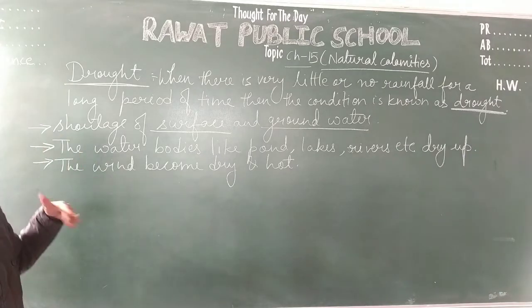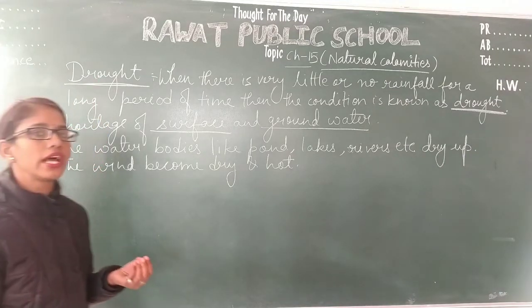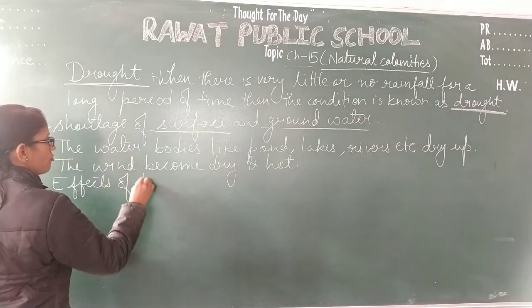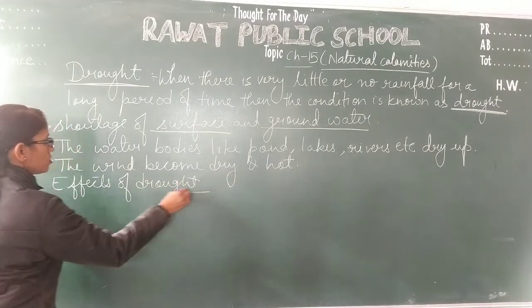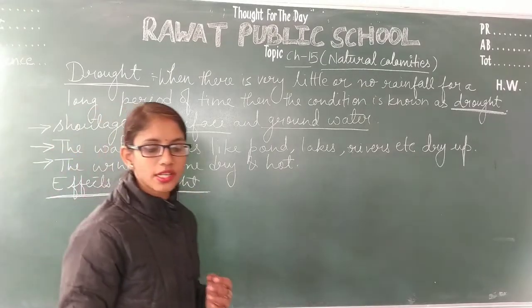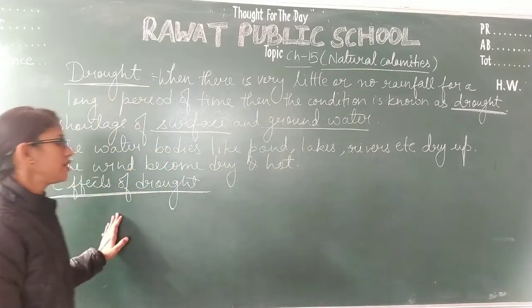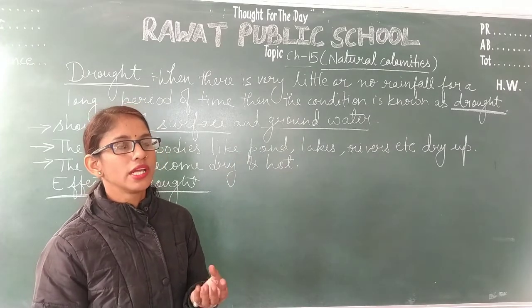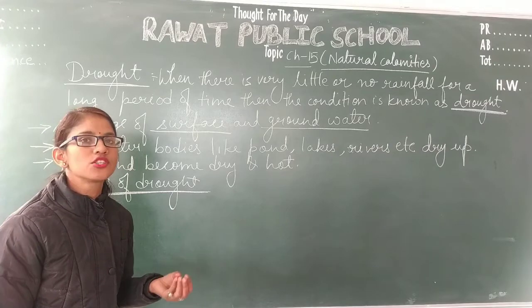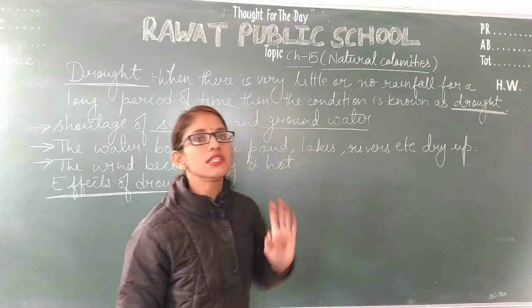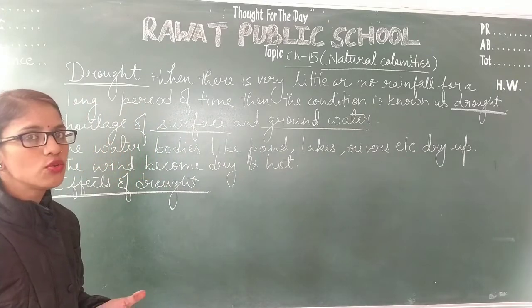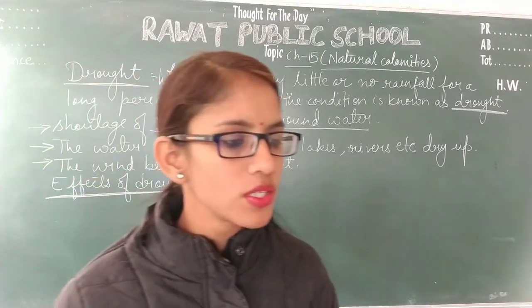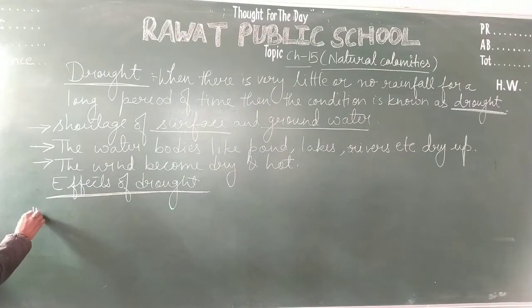Now, what are the effects of drought? In India, we mostly depend on rain for the irrigation of crops. If there is no rainfall, crop production will reduce or decrease, and crops get destroyed.